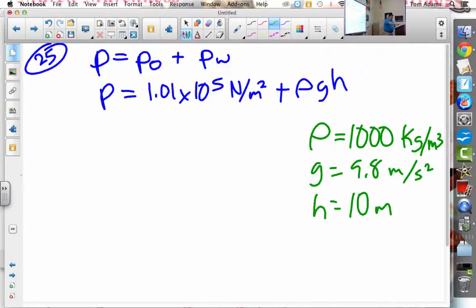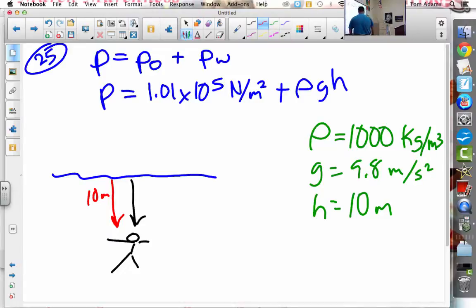Now what this means is, and I kind of talked about this on 21, and that's why I assigned 25 again. If I'm in the water, that's the surface of the water, and I'm down here, and this is me. That's my scuba gear, and the distance from here to here is 10 meters. What I have is I have a bunch of water that's being pulled towards the center of the earth.